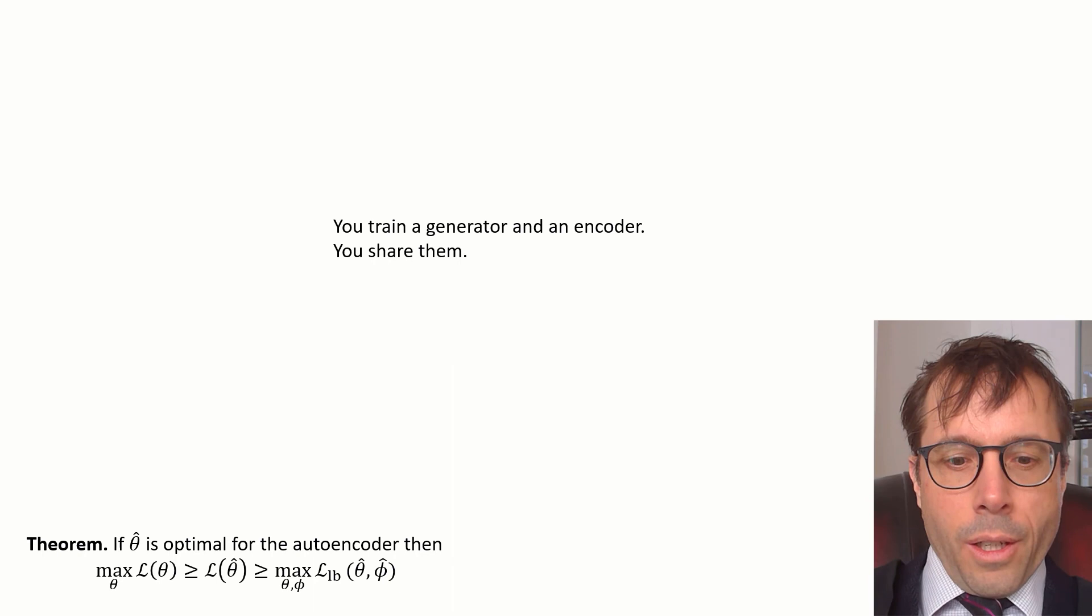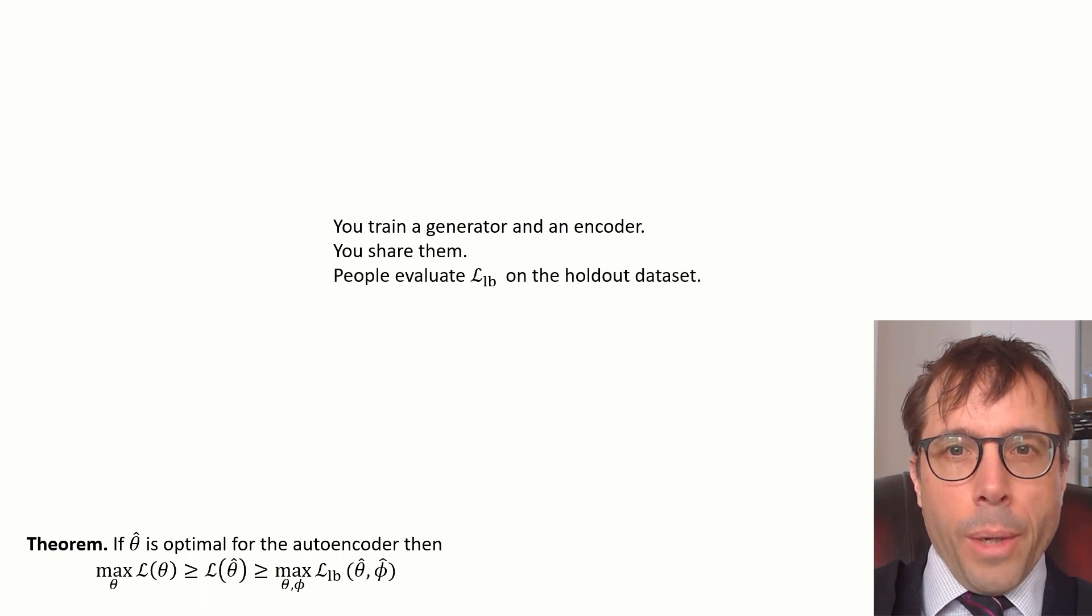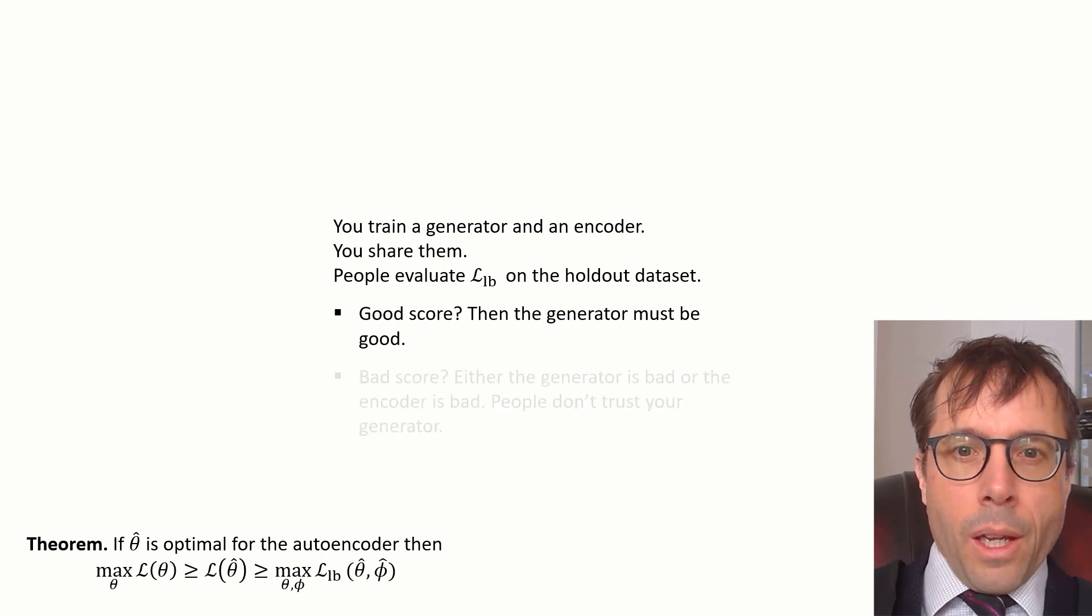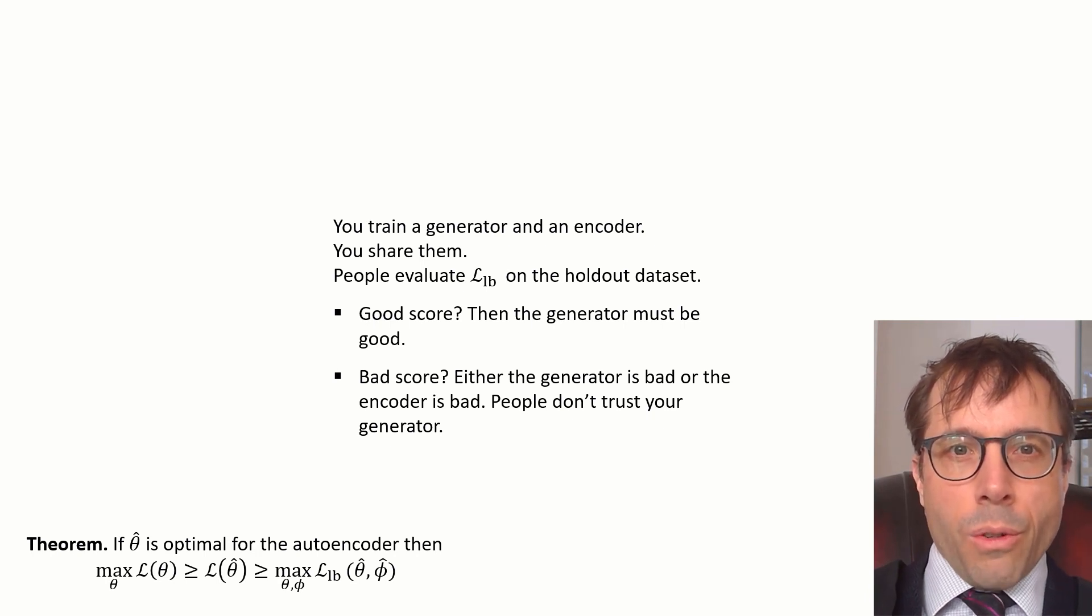Let's try again. Let's say you train a generator and an encoder and you publish them. Now people can just evaluate the log likelihood lower bound on the holdout data set. If the log likelihood lower bound is good, then the generator must be good. That's what the theorem tells us. If the log likelihood lower bound is bad, then perhaps your generator is bad, or perhaps your encoder is bad. Who knows? Your audience is likely to assume the worst and so they'll not trust your generator. The burden of proof is on you. If you really think your generator is great, then you should go away and work harder to find a good encoder for it.